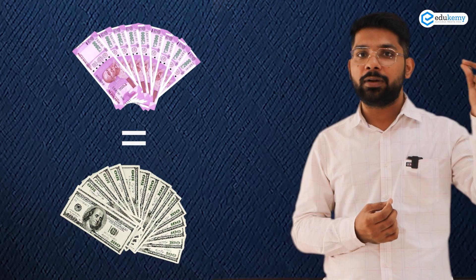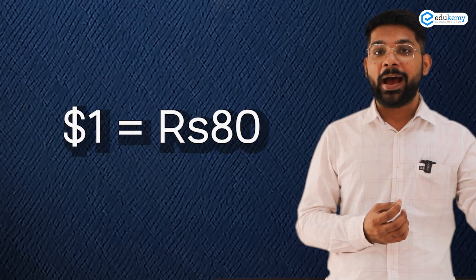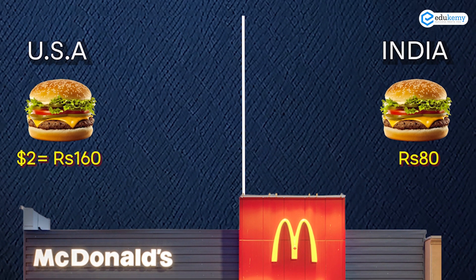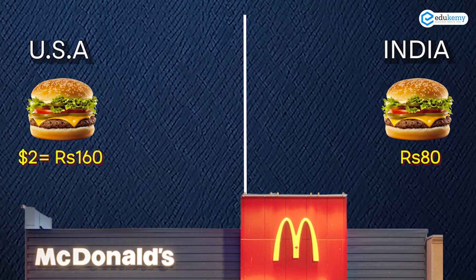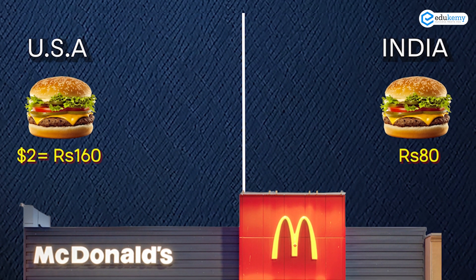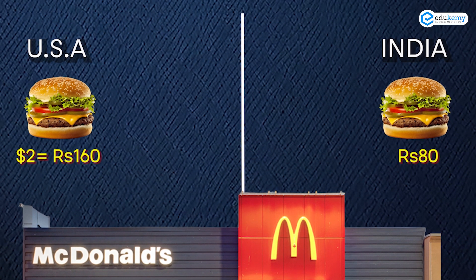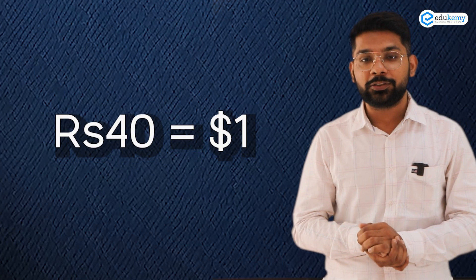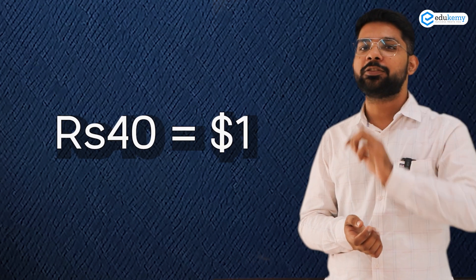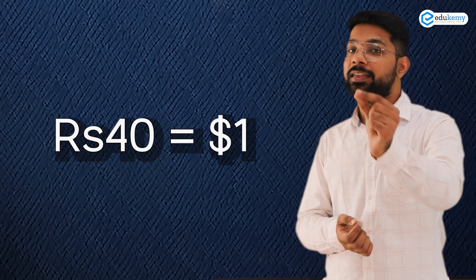So the same burger can be bought in India for 80 rupees and in the USA for 160 rupees. In real terms, what is the value of the Indian rupee compared to the USA? On the basis of market rate, one dollar equals 80 rupees. But on the basis of purchasing power — buying the burger at 80 rupees in India versus 160 rupees in the USA — the original rate is 40 rupees per dollar.